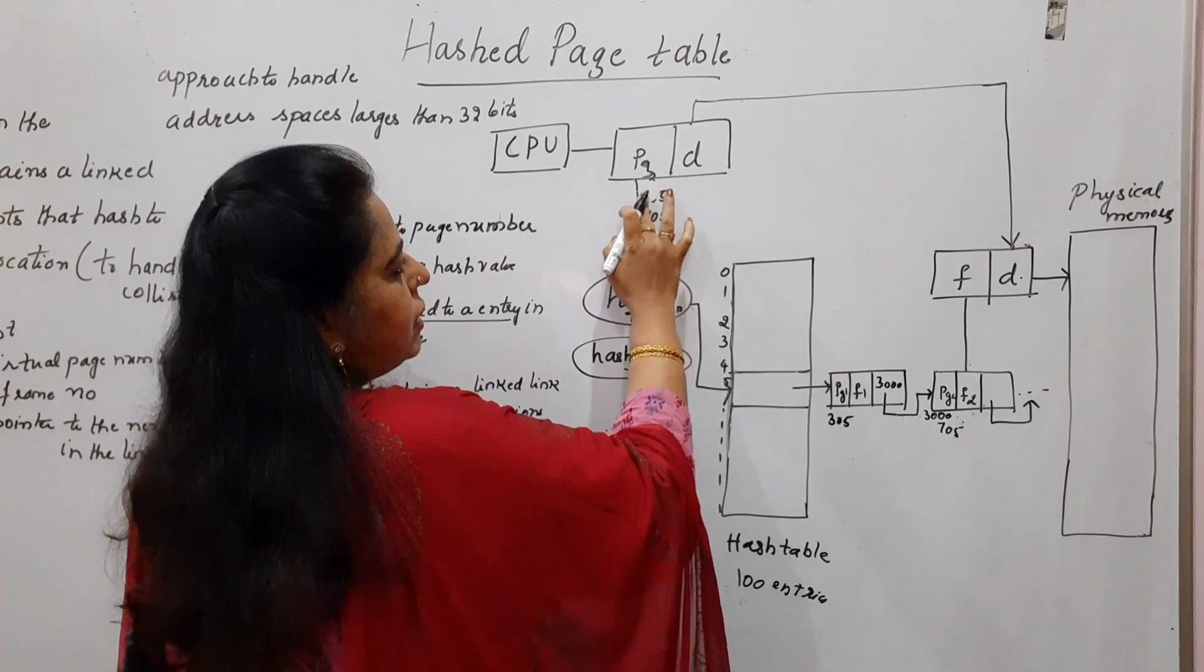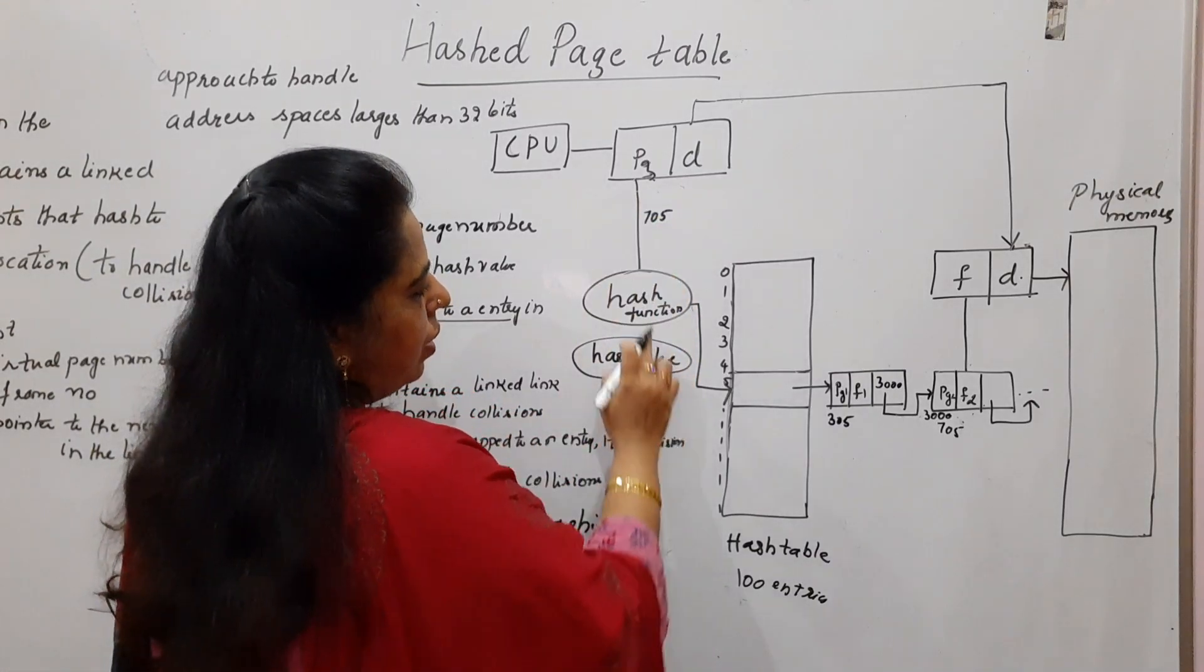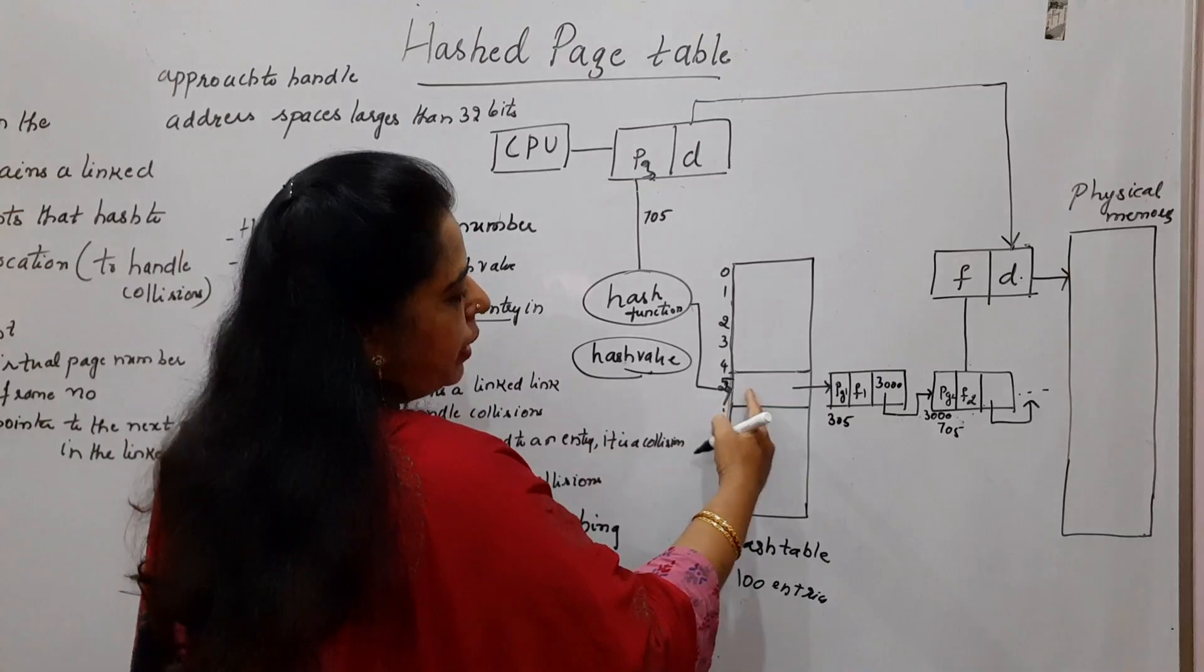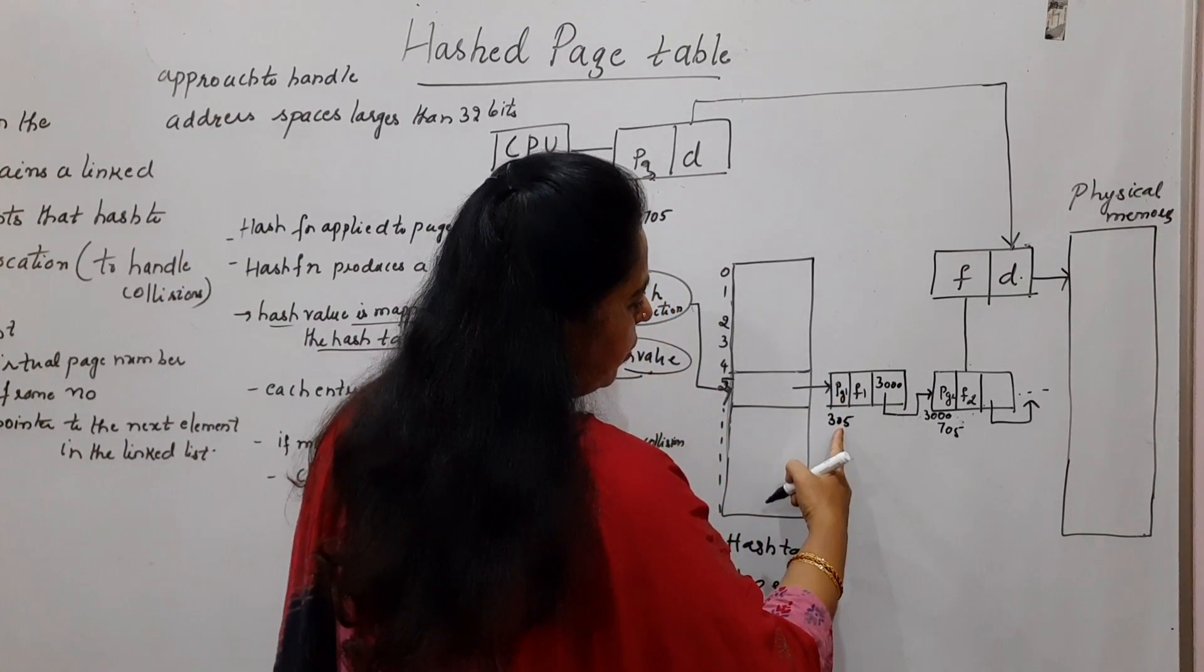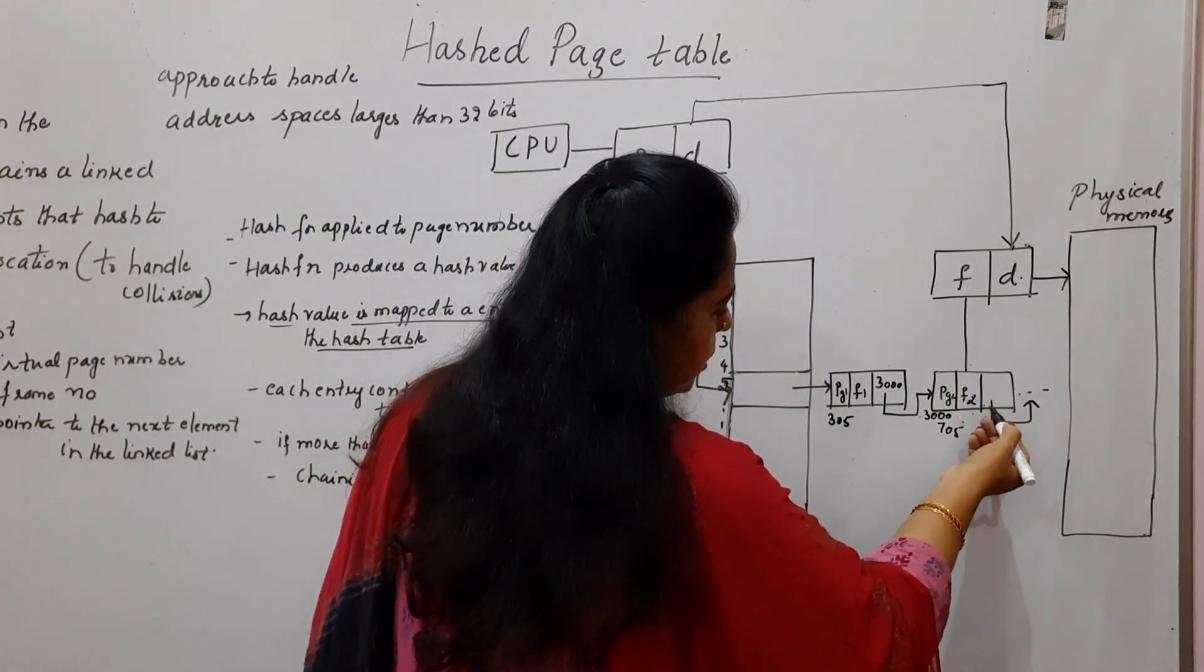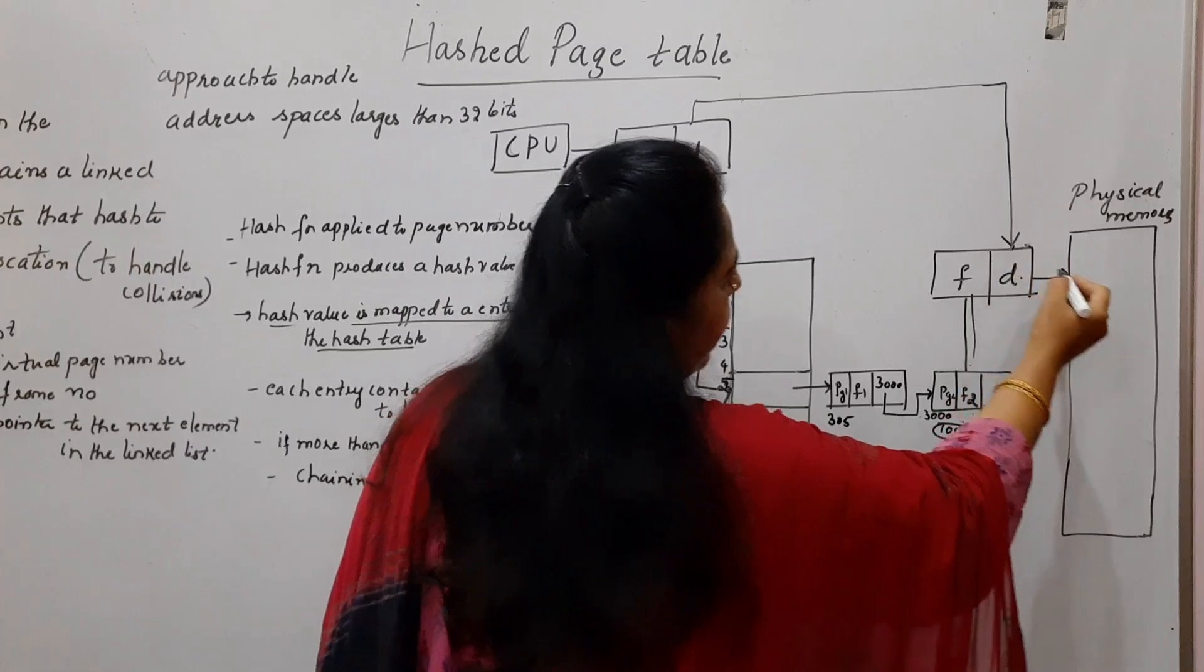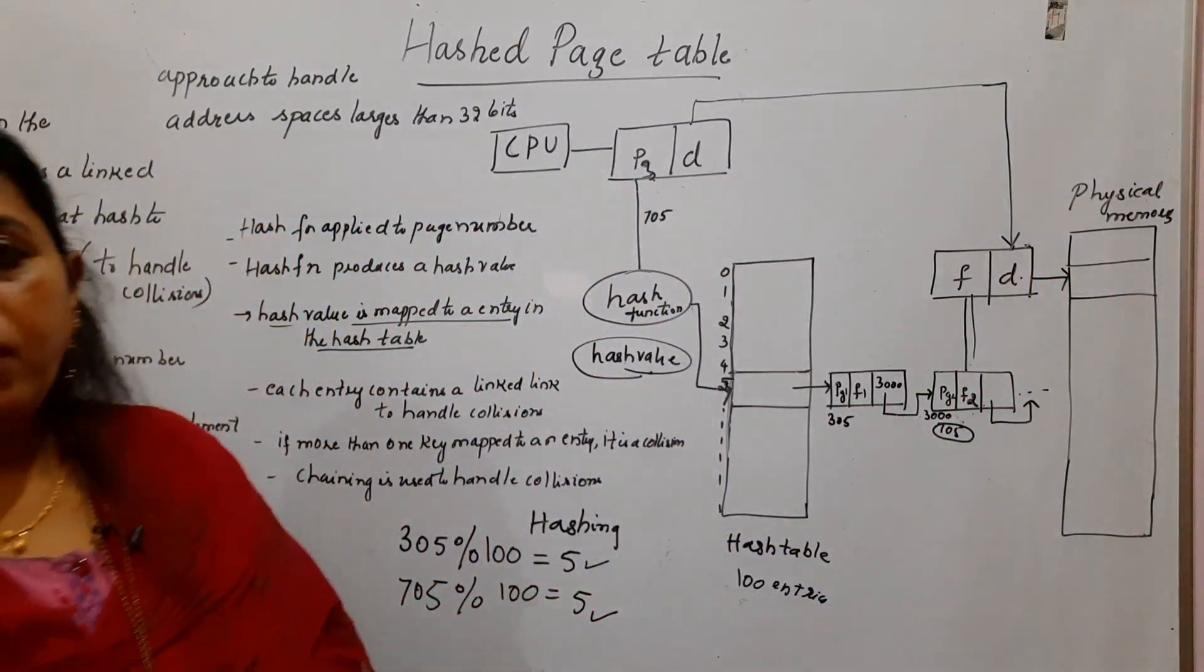Suppose if the logical address is consisting of page number 705, when you apply the hash function to this page number, you get a hash value. The hash value is 5. 5 is pointing here. Page number 1 is having 305, but your page number is 705. It is not matched. So it will search the next one. When it finds a match, whatever is the corresponding frame number that is picked here, it will add it to the displacement value. And then it reaches the physical address that is present there in order to fetch the instruction.